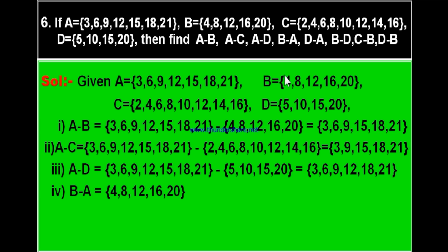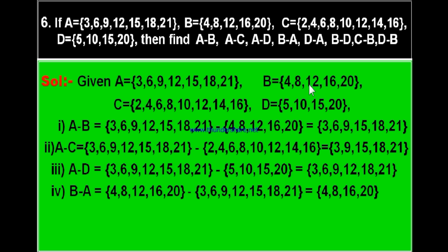Fourth part: B minus A. Write set B = {4, 8, 12, 16, 20} minus set A = {3, 6, 9, 12, 15, 18, 21}. 4 is not in A — write 4. 8 is not in A — write 8. 12 is in A — leave it. 16 is not in A — write 16. 20 is not in A — write 20. Therefore B minus A equals {4, 8, 16, 20}.